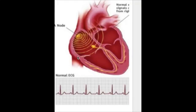Regarding the conducting system of the heart: the SA node is located in the upper posterior wall of the right atrium, below the opening of the superior vena cava.